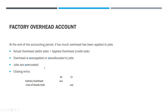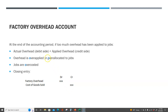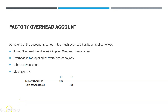Now, depending on what the factory overhead account looks like, you have two ways to close the account. First, we're going to look at the situation when too much overhead has been applied to jobs. Looking at the T-account, the left side, the debit side, represents the actual overhead numbers, and the right side or the credit side represents the applied overhead, which is based on estimates.